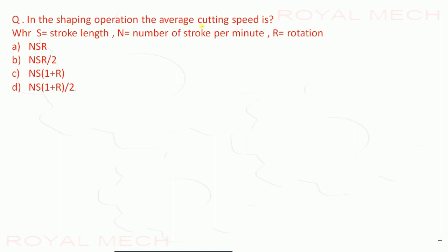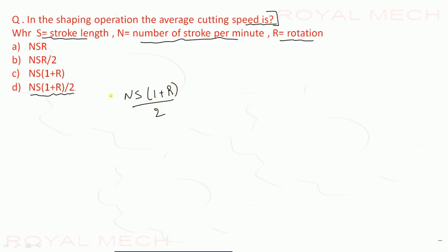In the shaping operation, what is the formula for average cutting speed? Here, S is stroke length, N is number of strokes per minute, and R is the ratio. Out of the four options, option D is correct. Average cutting speed = N × S × (1 + R) / 2. This is the formula to find average cutting speed in the shaping operation.